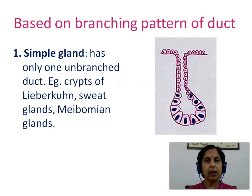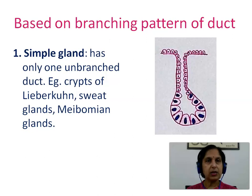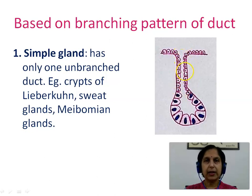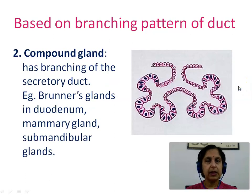Let us see how we classify exocrine glands based on the branching pattern of the duct: simple gland and compound gland. A simple gland has only one unbranched duct. Examples are intestinal crypts, sweat glands, and meibomian glands. As seen in the diagram, there is a single unbranched duct with a secretory unit — that is a simple gland.